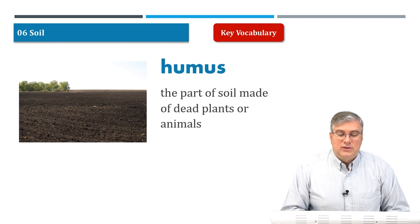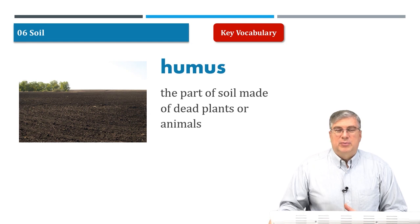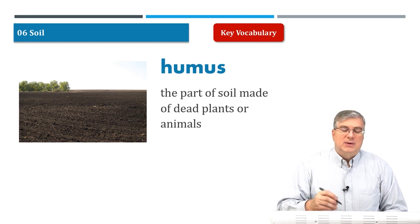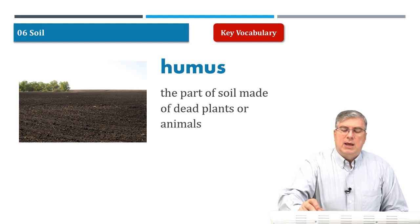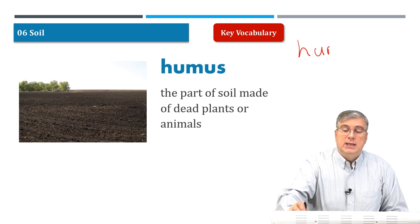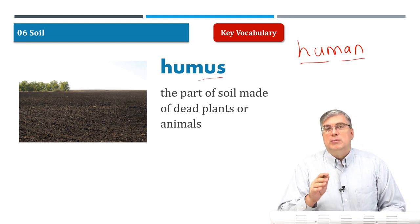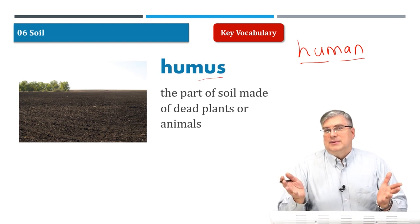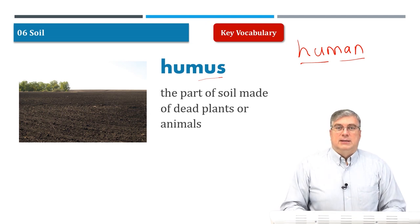Our first word is 'humus.' You may have not heard this word before. The pronunciation is 'humus.' Sometimes people get a little confused about that. Think about another word that's pronounced very similarly but is a different word: 'human.' So human, humus — similar pronunciation at the beginning. Humus, not human.